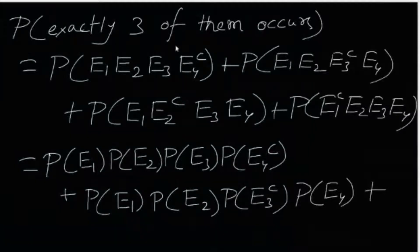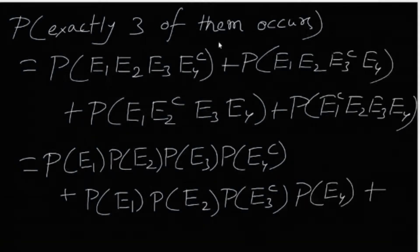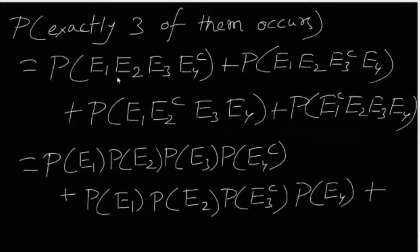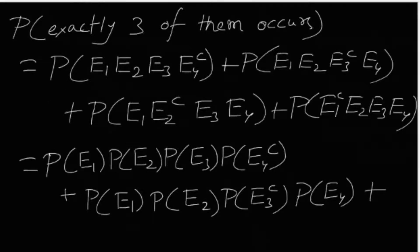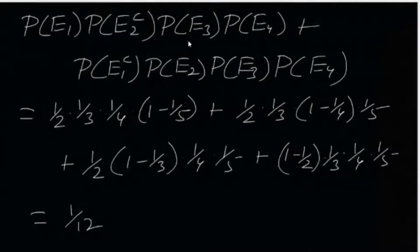The probability of exactly three events occurring can be written in four ways: E1, E2, E3 occur and E4 doesn't; E1, E2, E4 occur but E3 doesn't; E3 doesn't occur; or E1 doesn't occur. In each term, exactly one event does not occur. Since independent events and their complements are also independent, each term decomposes into the product of individual probabilities.